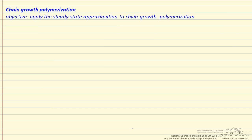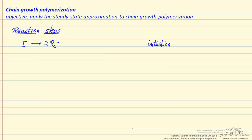In this screencast we are going to look at a simple example of chain growth polymerization, and then look at applying the steady state approximation to the active centers in the reaction to determine how the rate of reaction depends on monomer concentration and initiator concentration.